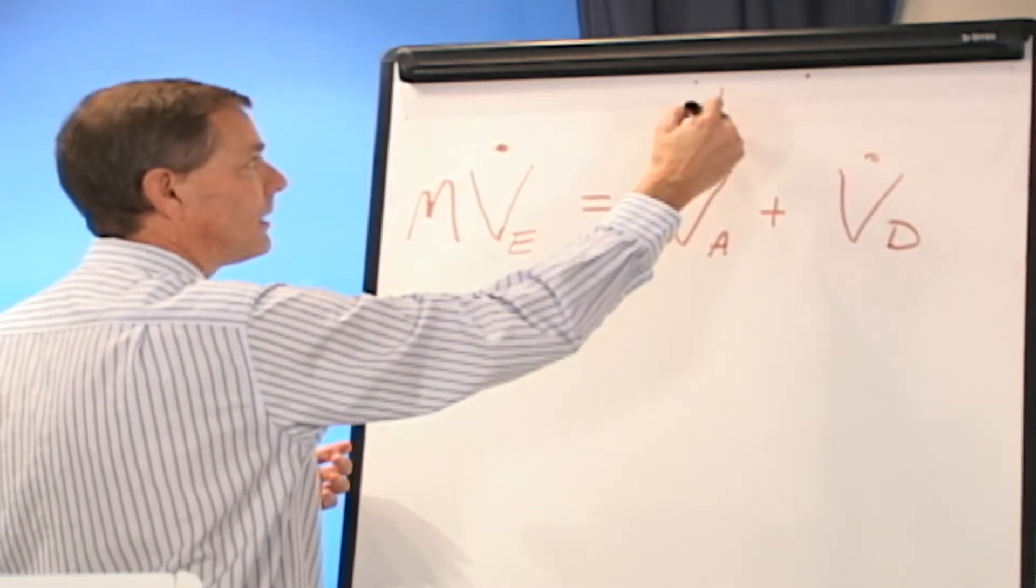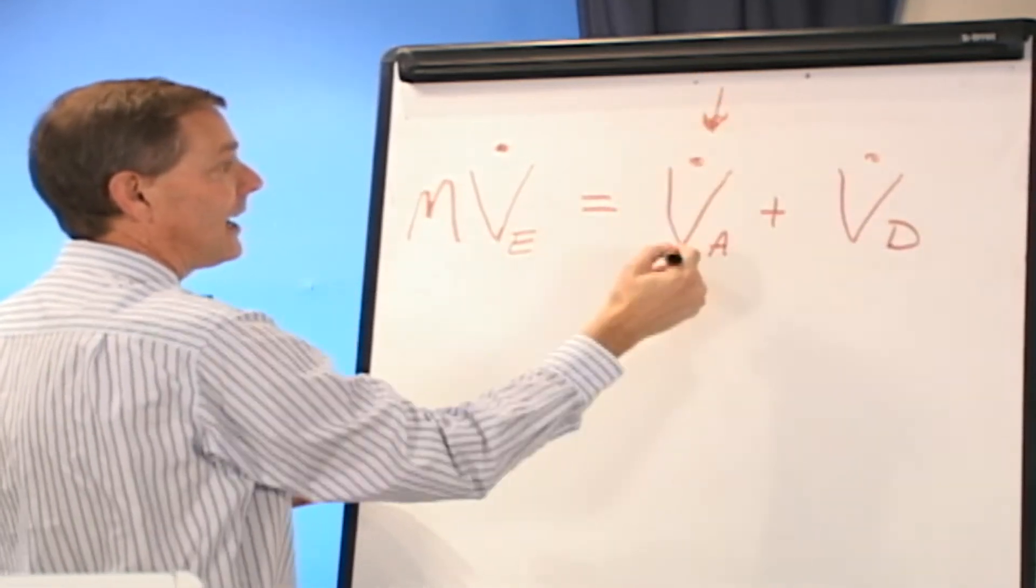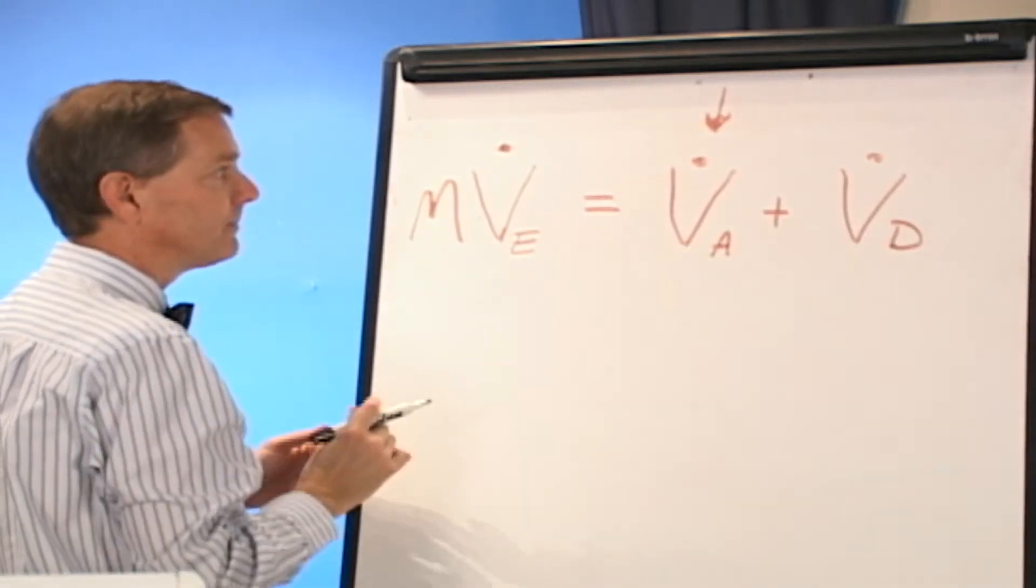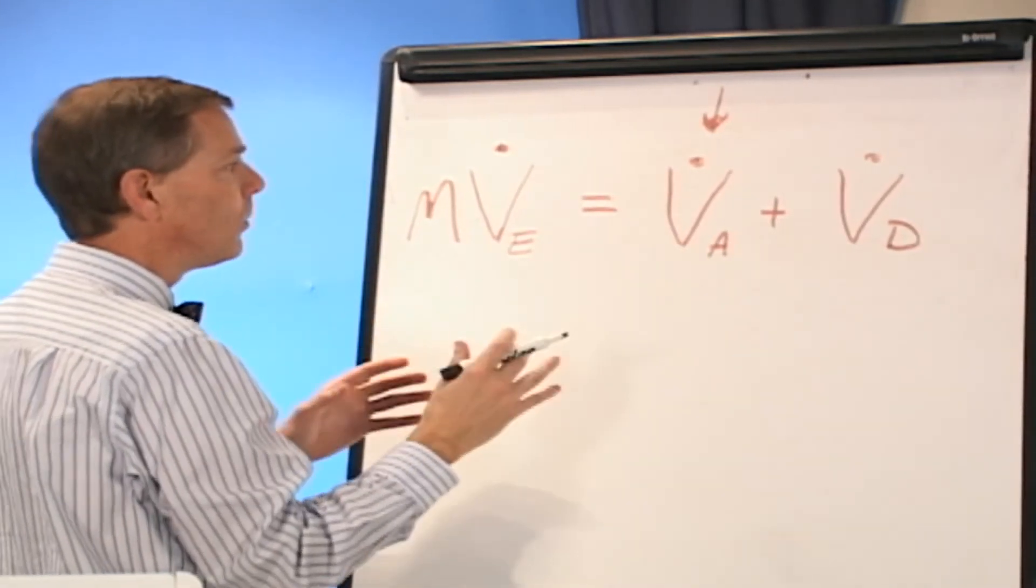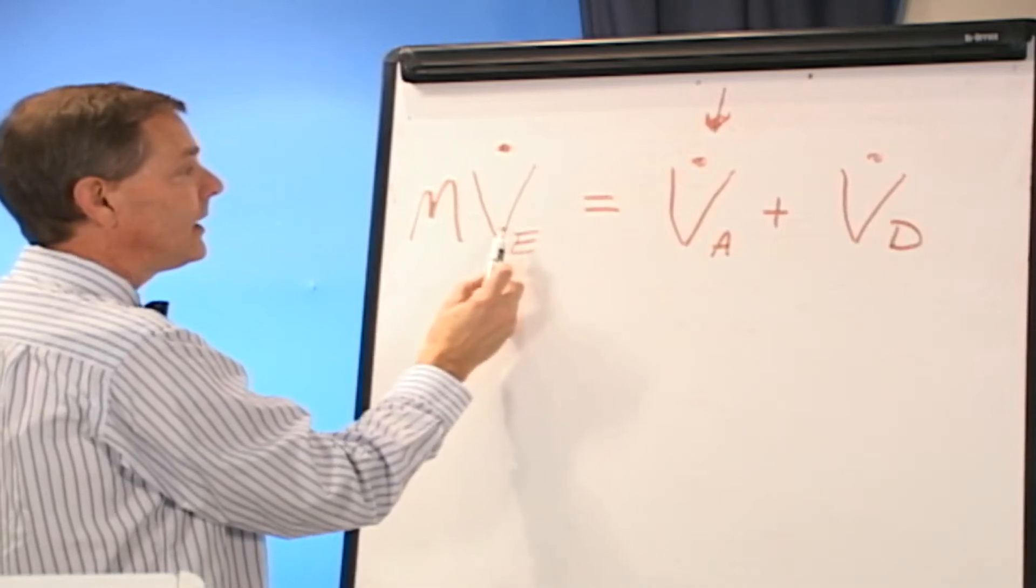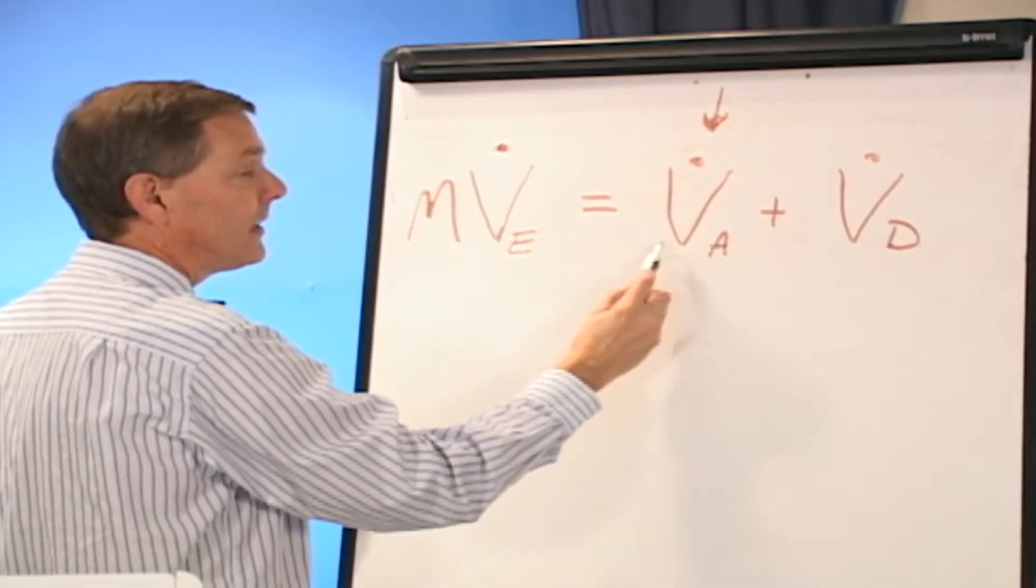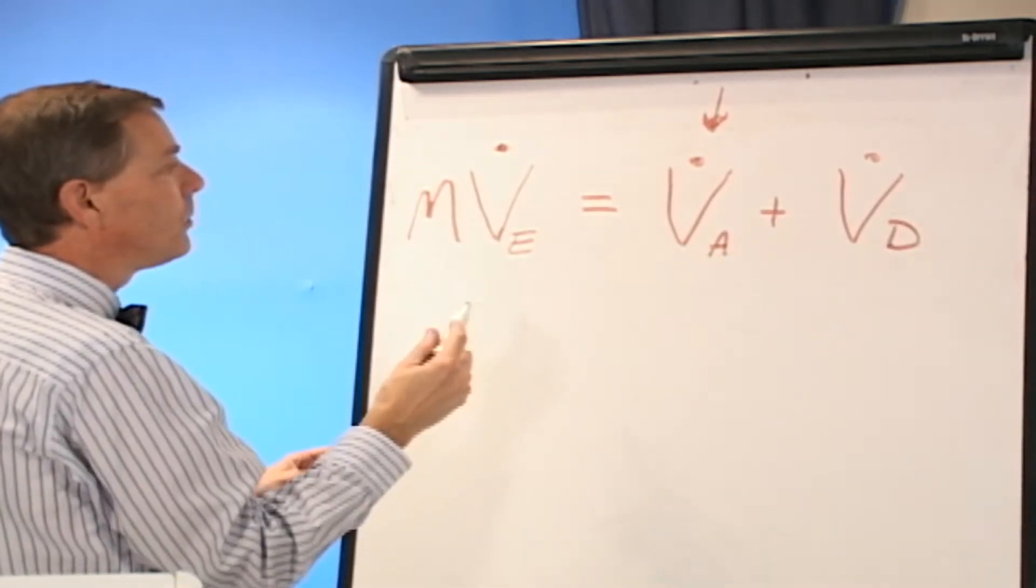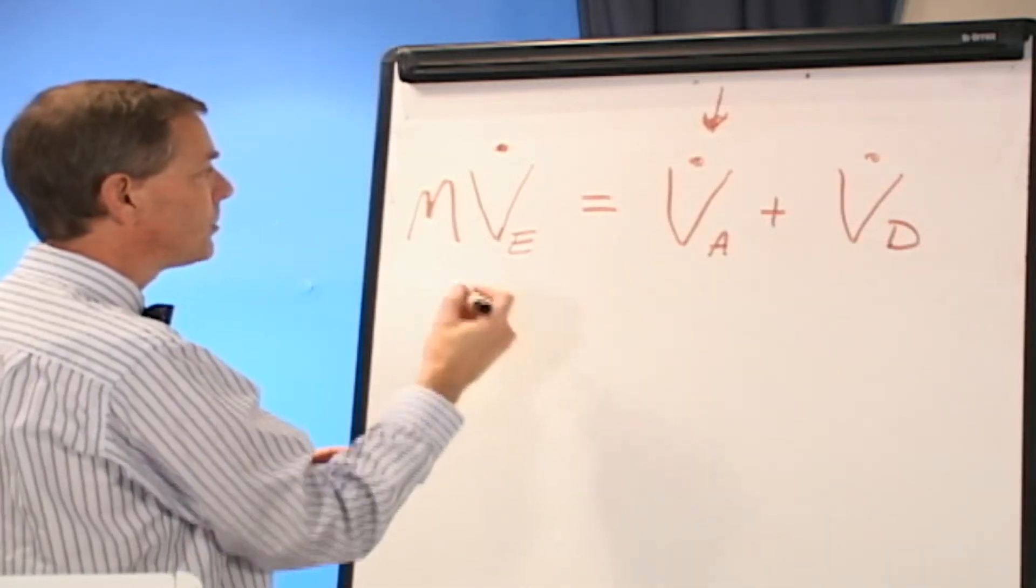So most of it's going to reach the alveolus. This is where the gas exchange is going to take place by the alveolar ventilation. So what's really important is minute ventilation, but if I'm not ventilating my alveoli, I'm not living.